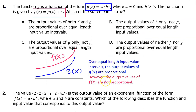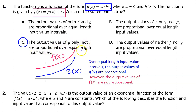So remember: if you do a vertical translation to an exponential function, the output values will not be proportional. The answer is C — the output values of g only, not f, are proportional over equal length input values.